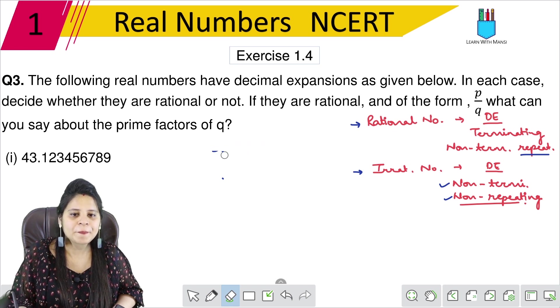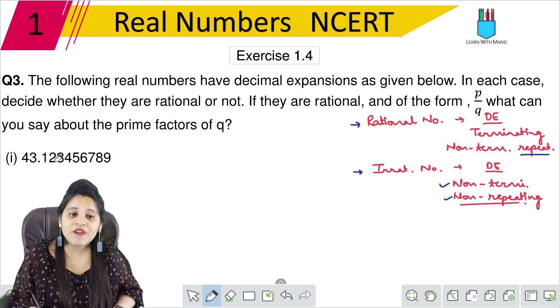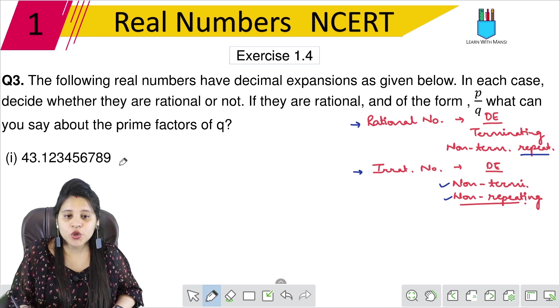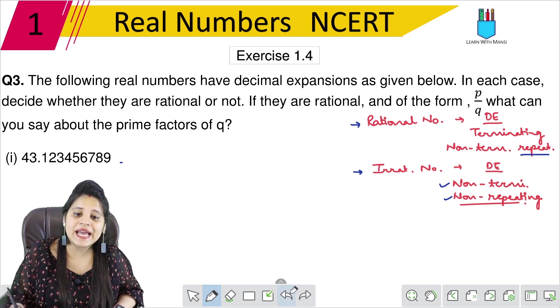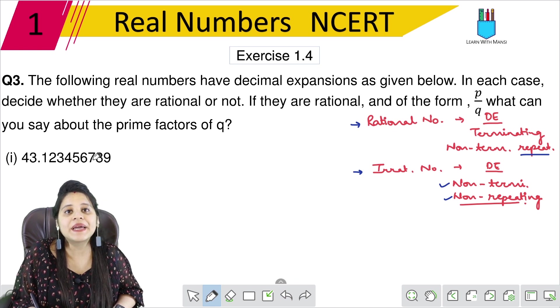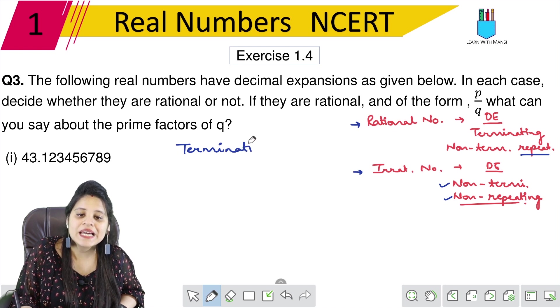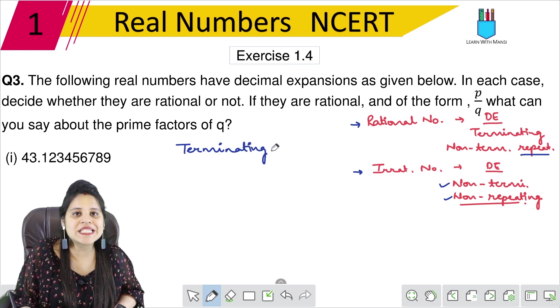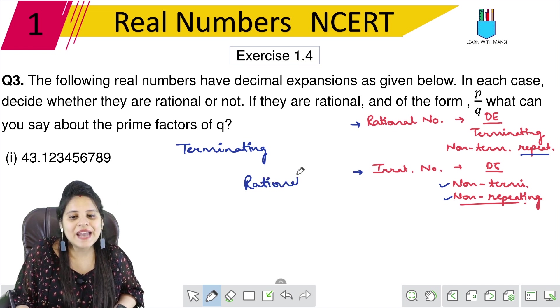Let's do this. We have only three parts. First part is 43.123456789. If there is no dash, it means it will terminate. So this is terminating. Since the decimal expansion is terminating, we can say this will be a rational number.